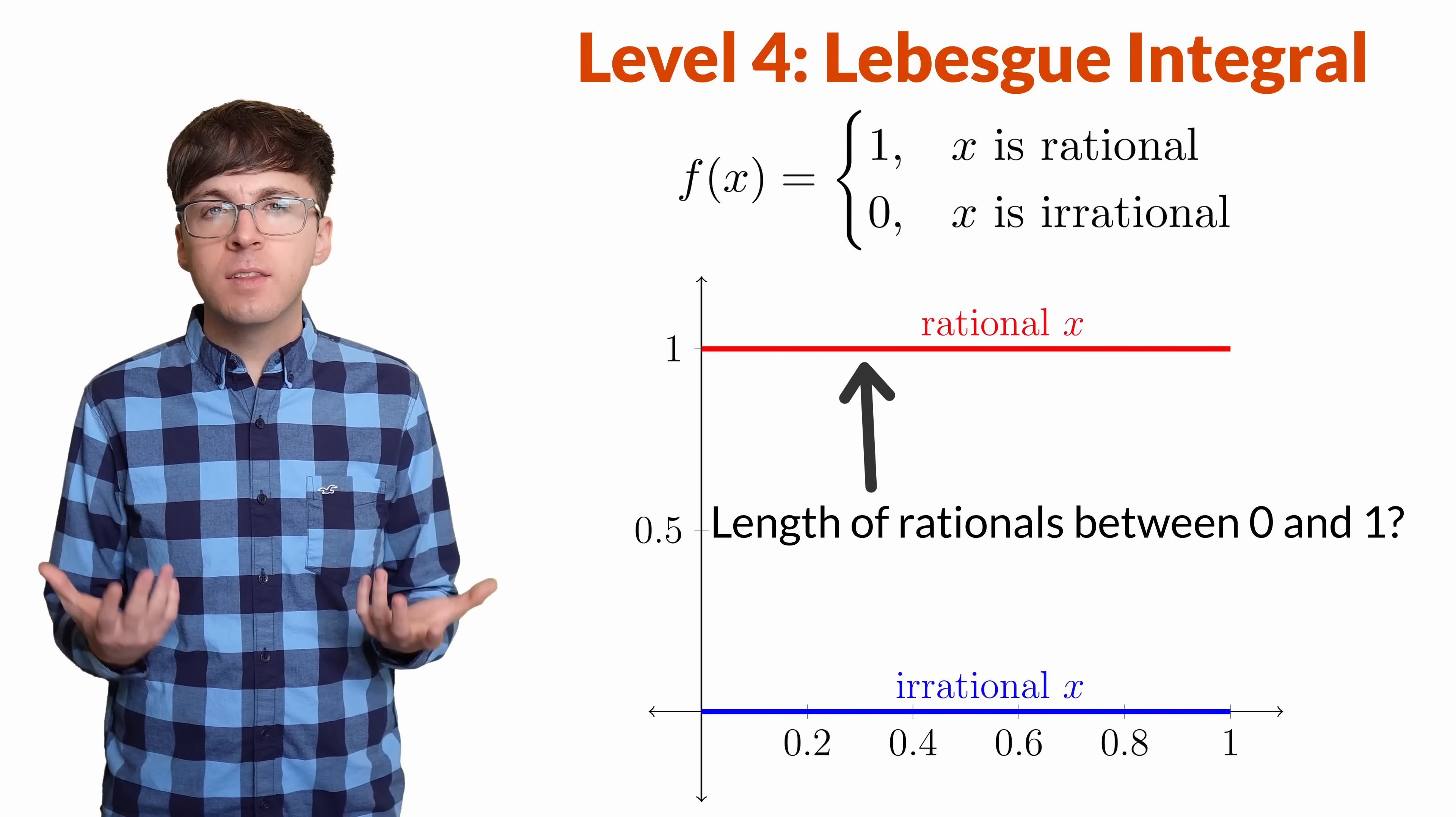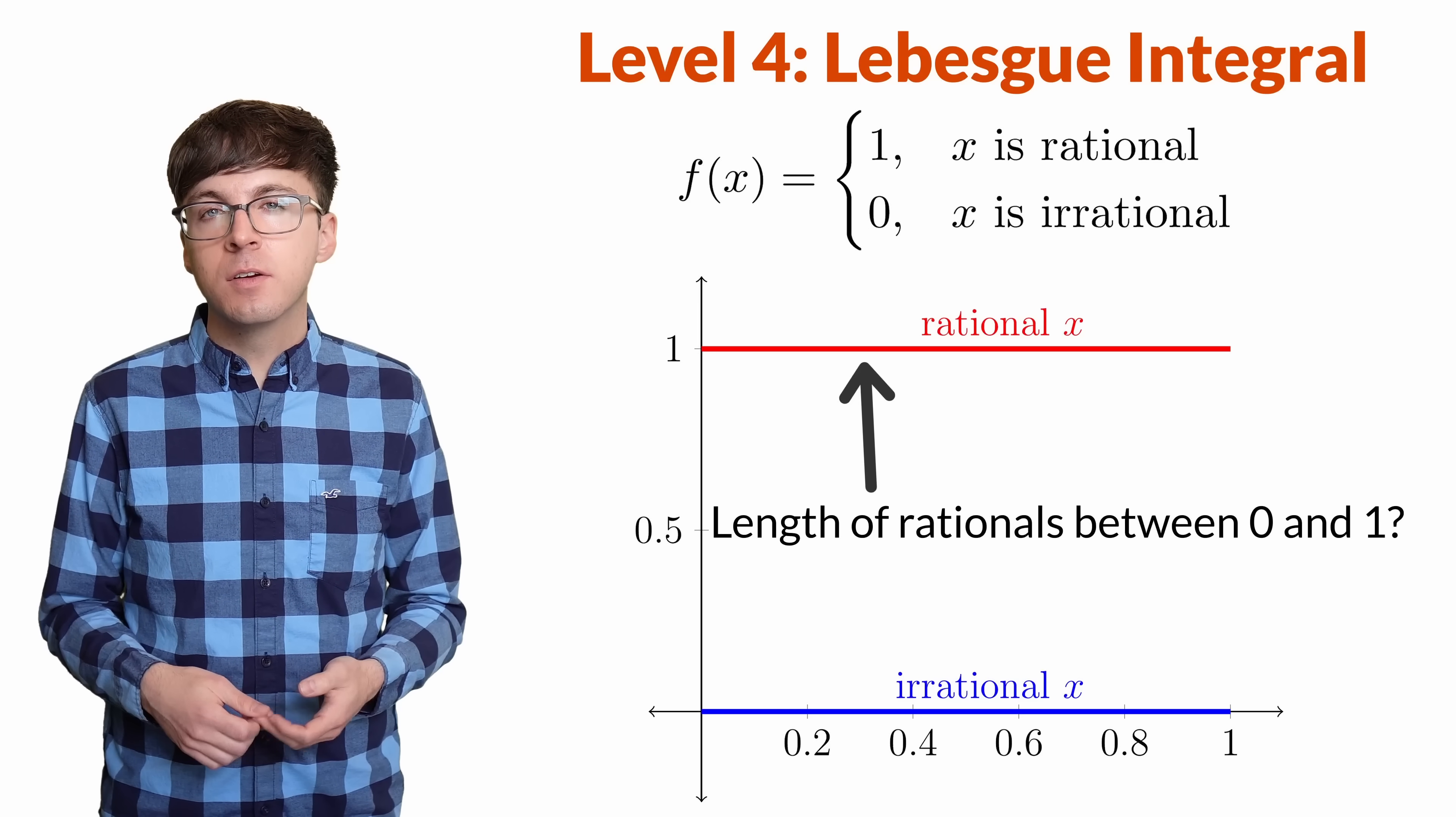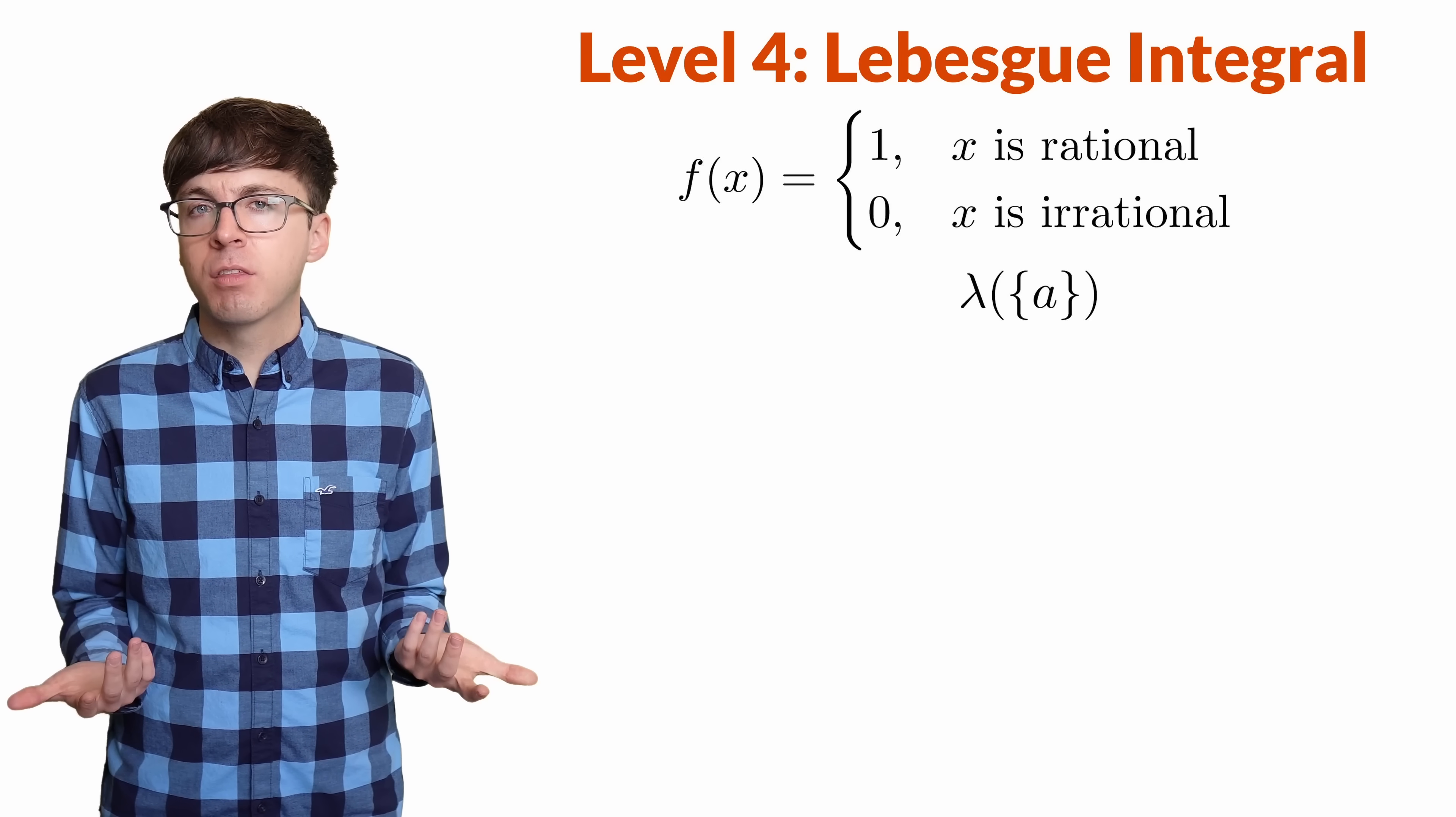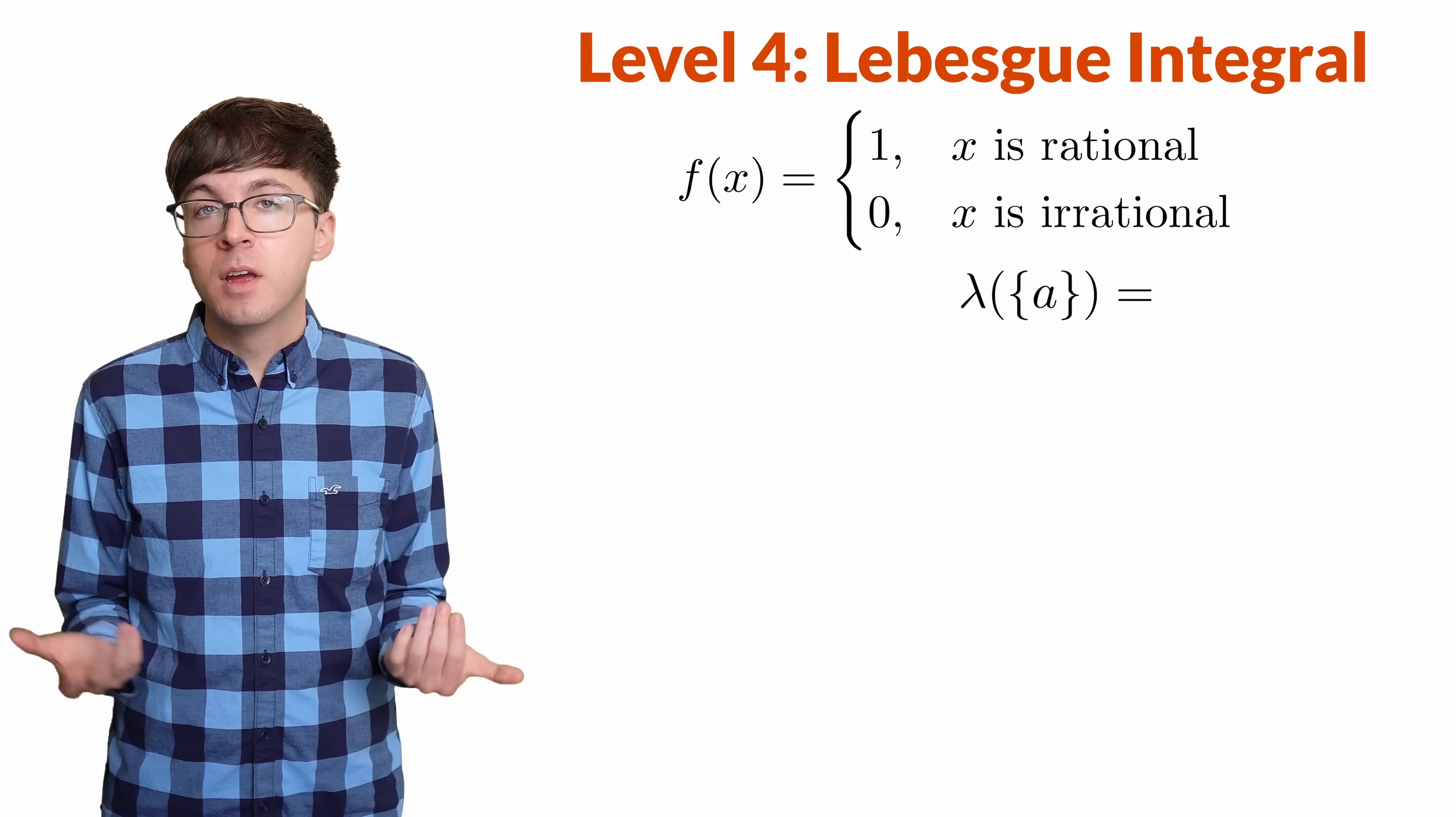Rigorously, we need to define the Lebesgue measure, which leads to a branch of math called measure theory. We won't get into all the details here, but let's give an intuitive explanation. What would be the Lebesgue measure of a single number? A single number has no length. The length of the interval a to a is 0. So it would make sense for the Lebesgue measure of a single number to be 0.